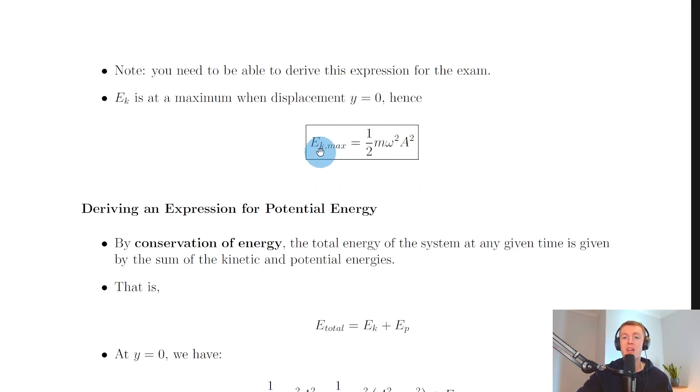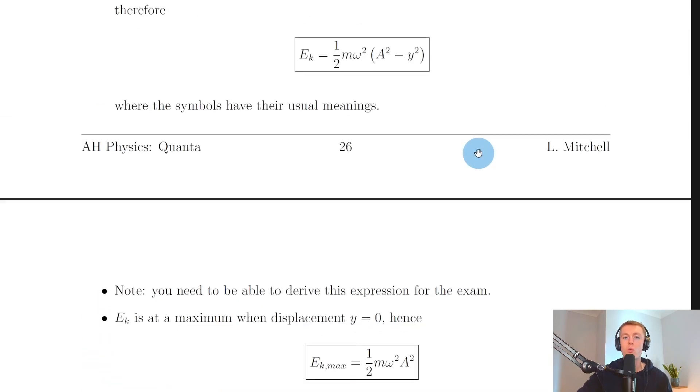This means our maximum kinetic energy equals ½mω²A², because when y = 0, the y² term cancels out, leaving us with Ek(max) = ½mω²A².